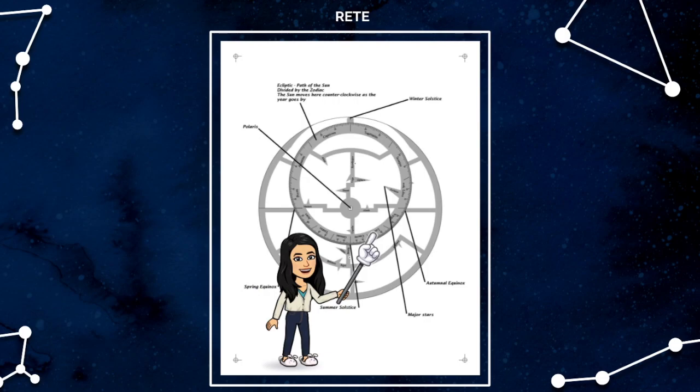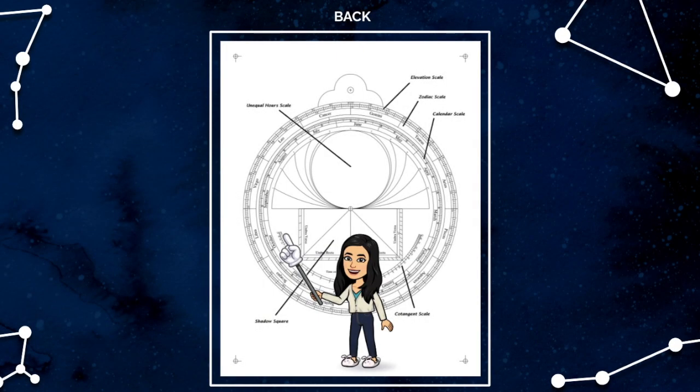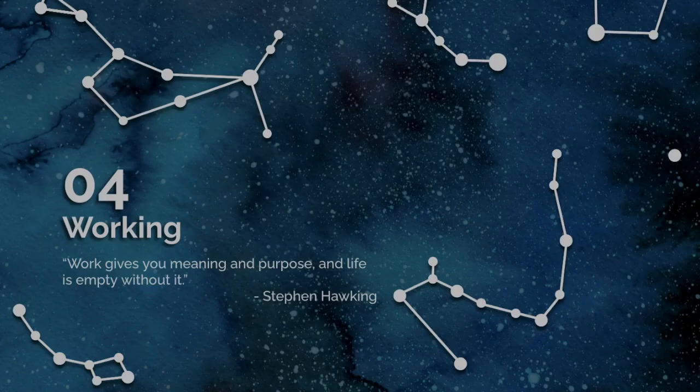The almucantar and azimuth lines give us the altitude-azimuth coordinates of the stars. The back of the astrolabe has the dates and the corresponding zodiac signs. The ruler at the back is called the alidade.